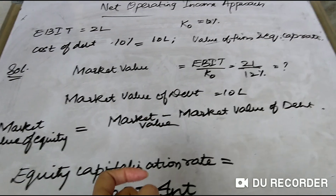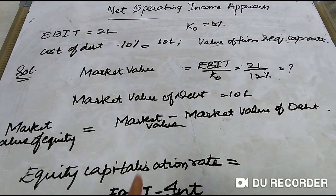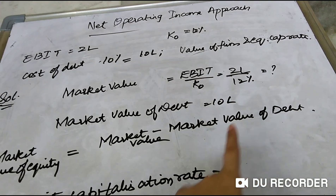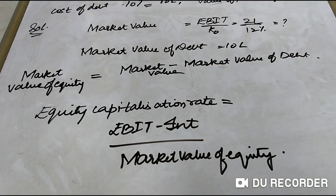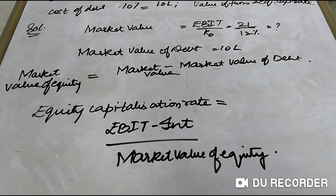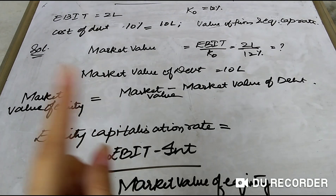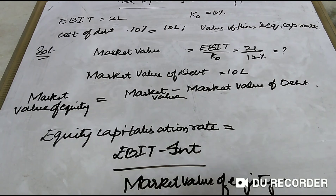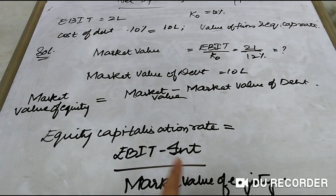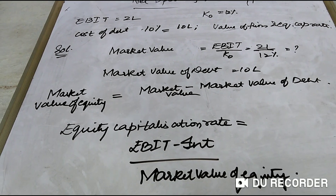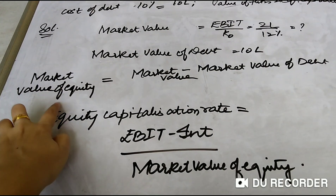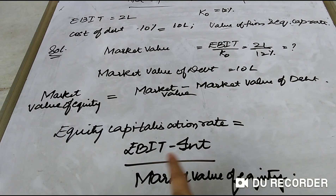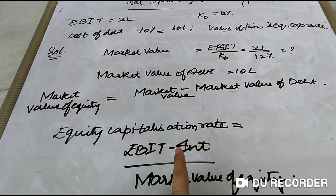Value of debt is already given as 10 lakh rupees. Market value of equity = Market value of firm − 10 lakh rupees. For the equity capitalization rate: EBIT minus interest. Interest = 10 lakhs × 10% = 1 lakh rupees. So EBT = 2 lakhs − 1 lakh = 1 lakh rupee. Equity capitalization rate = 1 lakh ÷ market value of equity. Complete step one first to get the market value of equity, then calculate the rate.